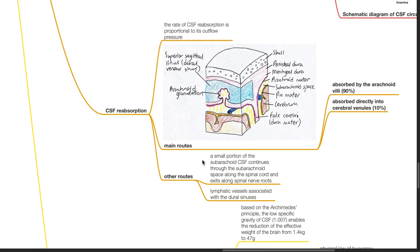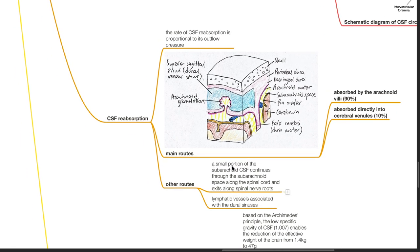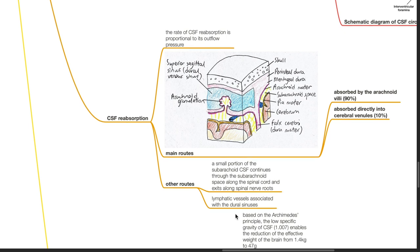Other routes of CSF reabsorption includes: a small portion of subarachnoid CSF continues through the subarachnoid space along the spinal cord and exits along the spinal nerve roots. Lymphatic vessels associated with the dural sinuses.